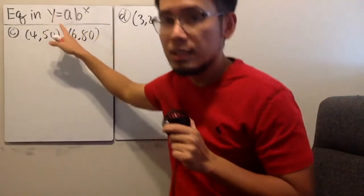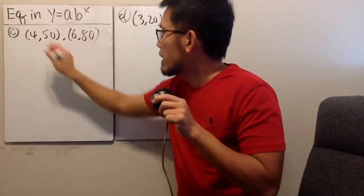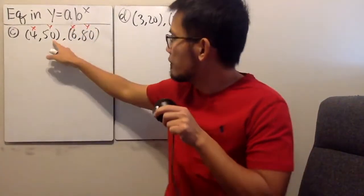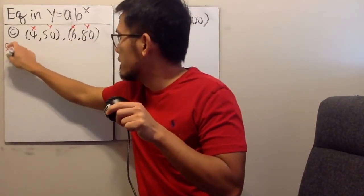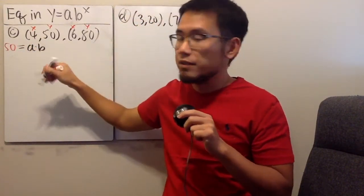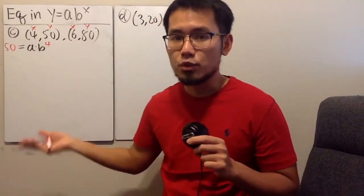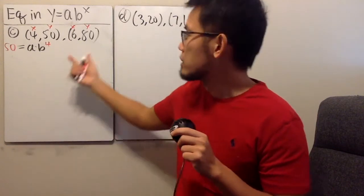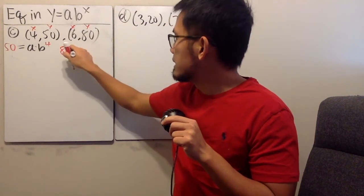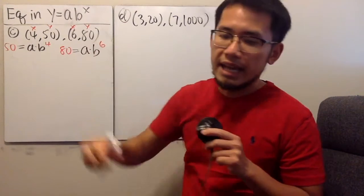We will find the equation y equals a times b to the x power. We have two points, so x, y, x, y. Put 50 into y, so we have 50 equals a times b to the fourth power, where x is 4. We don't know a or b, so we come to the second point: put 80 into y, giving 80 equals a times b to the sixth power, where x is 6.